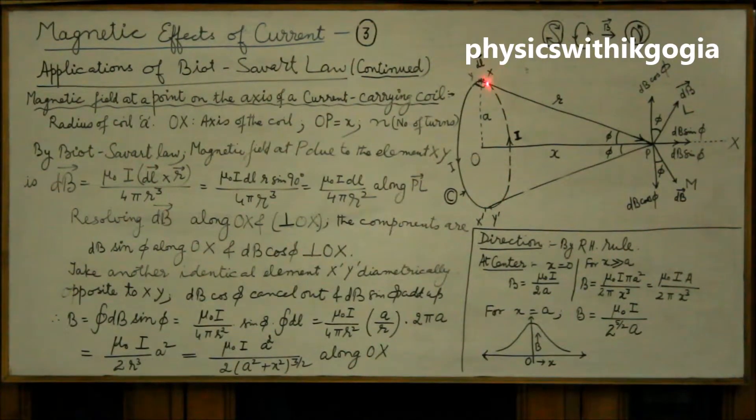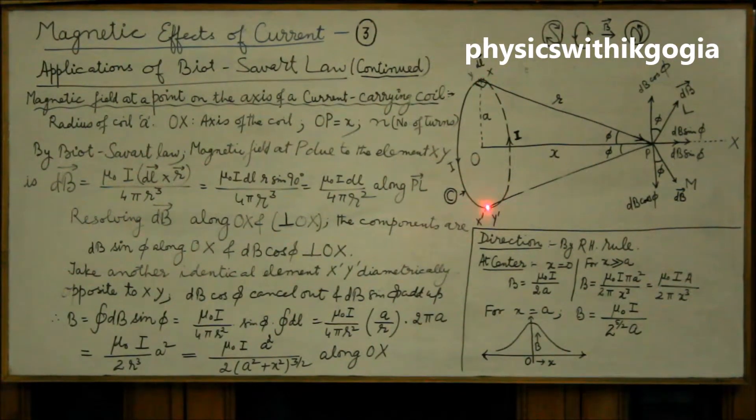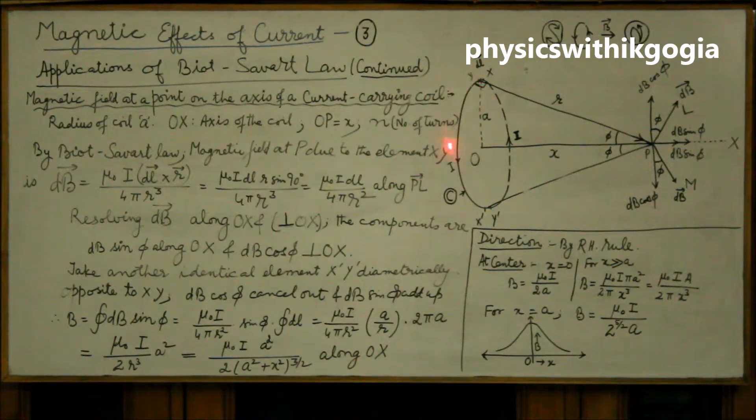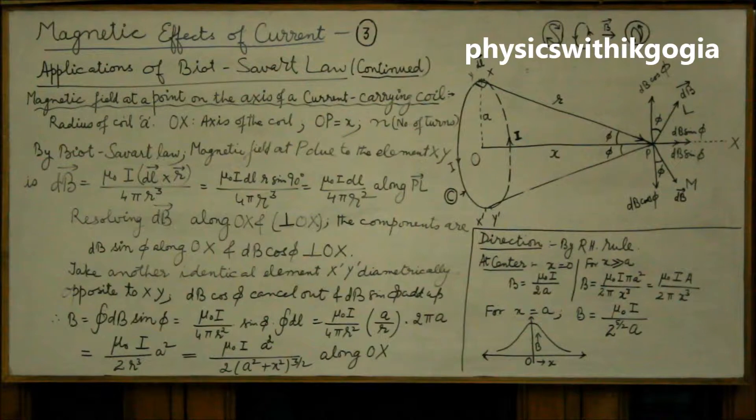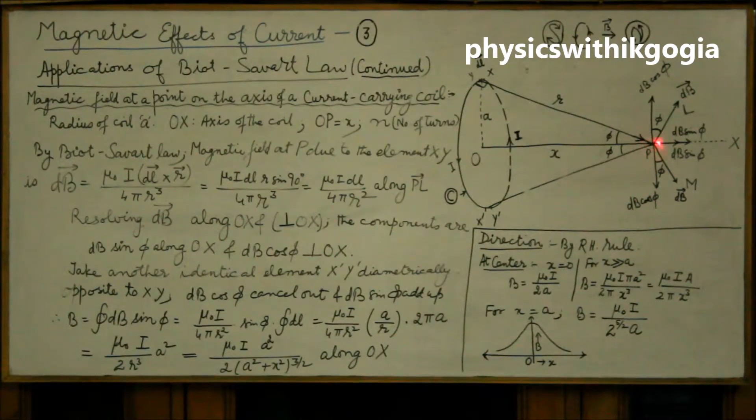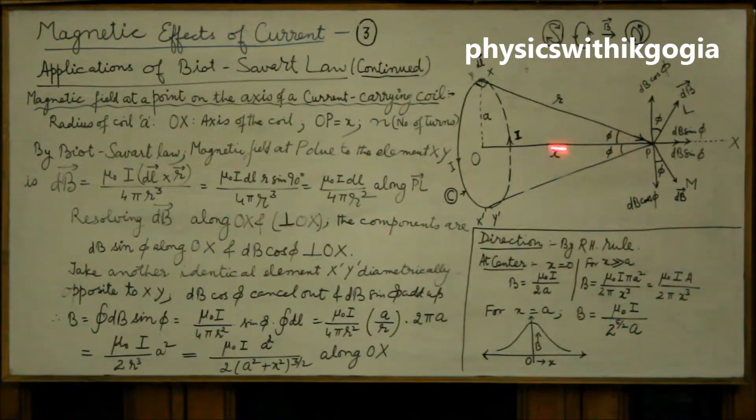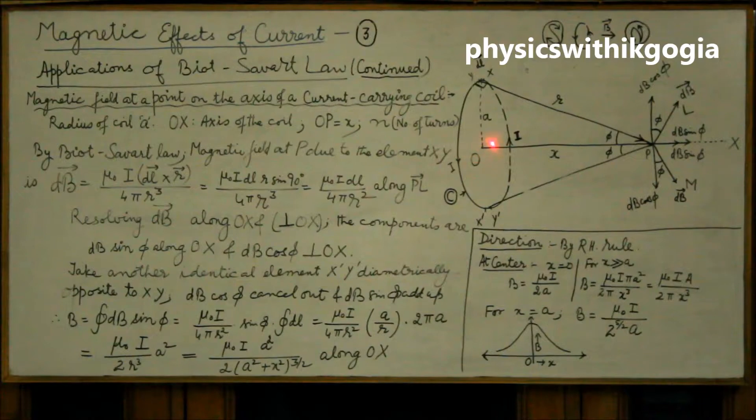This part of the coil, this half of the coil is behind the board, so drawn dotted and this part is out of the board, shown as bold semicircle. So, P is a point on the axis of the coil at a distance x from the center, A denotes the radius of the coil.